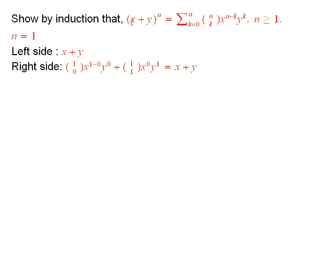So I let n equal to 1. When I do that, the left-hand side is just x plus y. The right-hand side would be 1 over 0, times x to the 1 minus 0, y to the 0, plus then 1 over 1, times x to the 0, y to the 1.